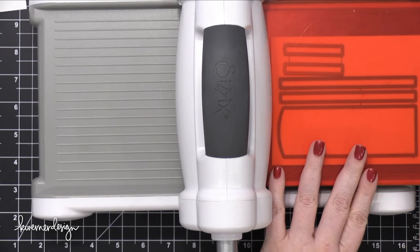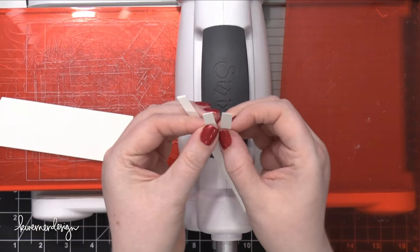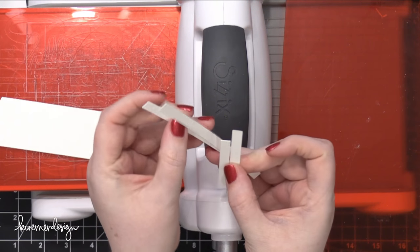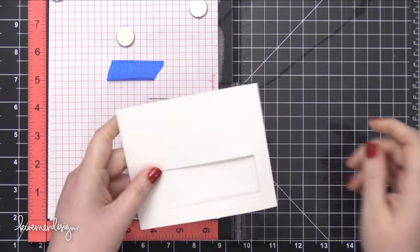Then I'm taking those remaining dies and I'm cutting those using some Neenah Solar White cardstock, the 110 pound version. I find that the slightly thicker cardstock works great for these slider cards.